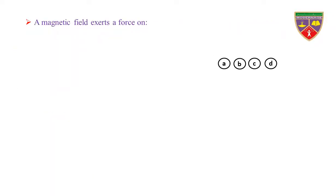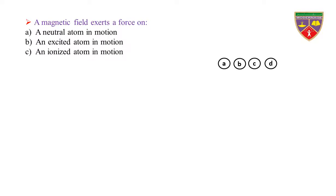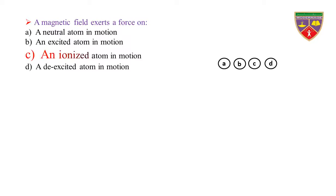A magnetic field exerts a force on: Option A, a neutral atom in motion. Option B, an excited atom in motion. Option C, an ionized atom in motion. Option D, a de-excited atom in motion. The key is an ionized atom in motion. Therefore, the correct option is C.